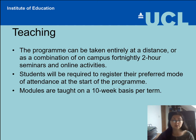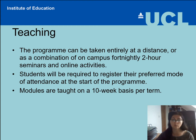Modules are also taught on a 10-week basis per term, meaning that if you have to come on campus you will need to come five times for each module. If you're doing online activities, again you will have five full-group online sessions, and then other activities will be asynchronous, meaning that you can do them in your own time at your own pace, with some more specific deadlines for each activity.